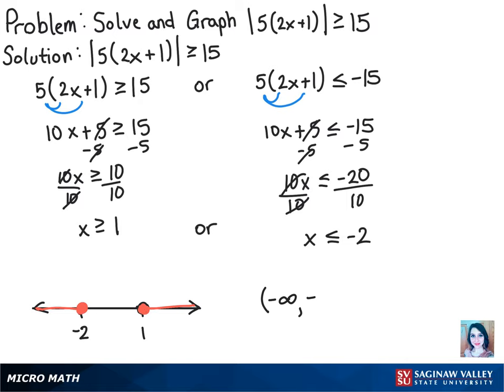Comma negative 2, and then we close with a bracket, since we're including the negative 2. And then we'll open with a bracket, and we'll have 1, comma, positive infinity, and close with a parenthesis. And that is our solution.